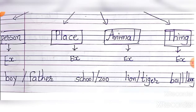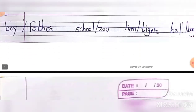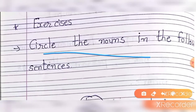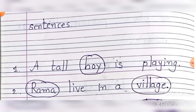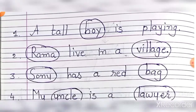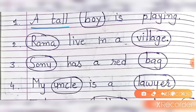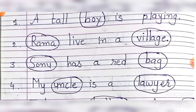Toh ab hum uski exercise dekhte hain. Circle the nouns in the following sentences — niche diya gai sentence mein se koun se noun hain, uske upar aapko circle karna hai. Toh first: a tall boy is playing. Tall boy matlab lamba ladka, toh us mein noun koun sa hai — boy. Toh boy ke upar circle.